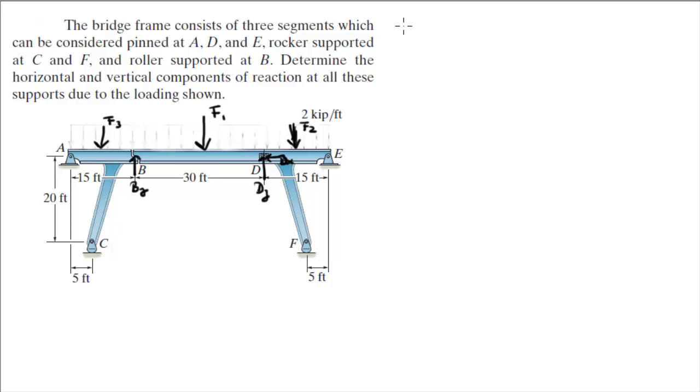So let's start. Find F1. F1 is equal to 30 times 2 because the distributed load which I erased is 2 kip per feet, so it's times 2. And that equals 60 kip, that is F1.